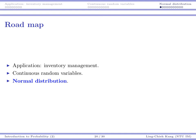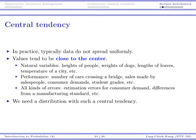Let's start our introduction about normal distribution. One of the motivations to introduce the normal distribution is because uniform distribution is not enough, because typically data do not spread uniformly. If we think about uniform distribution, there is a lower bound, there is an upper bound, and we say all the values in this region are equally likely to occur.